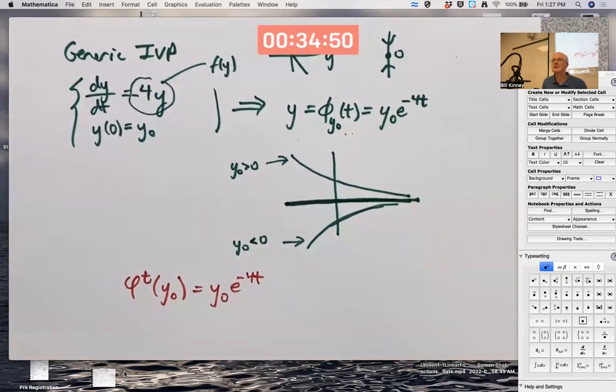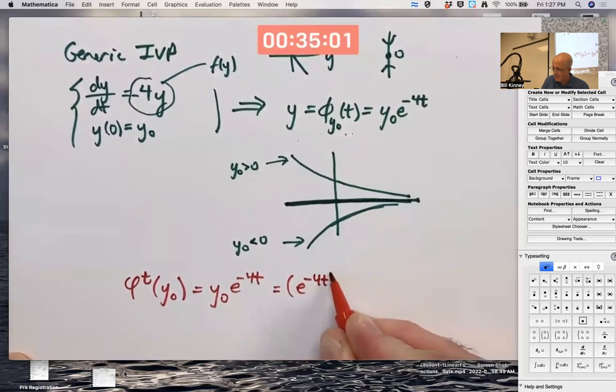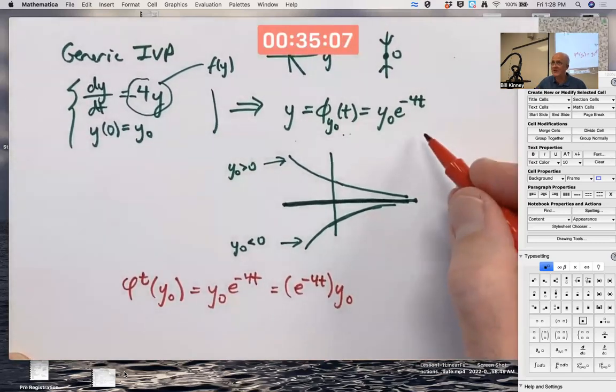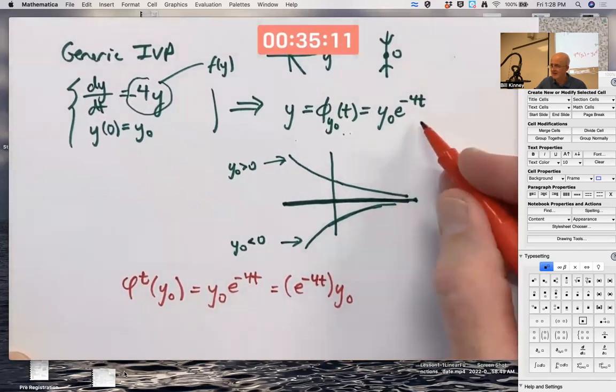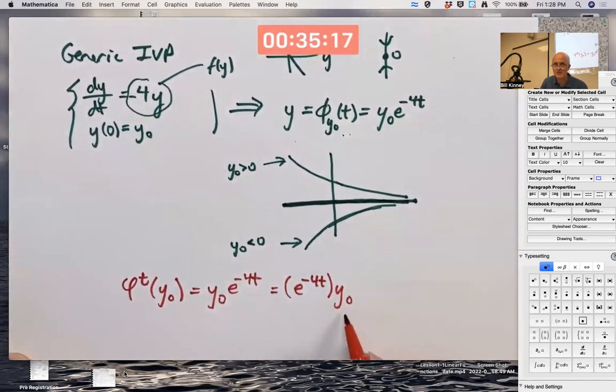The formula for this is the exact same formula. The only difference is we're just thinking about it differently. We're thinking about t is fixed and y_0 is the variable. Really, this is a linear function of y_0. It's a constant times y_0. That's an exponential function of t. A constant times an exponential decay function. This is a linear function of y_0, a constant times y_0.